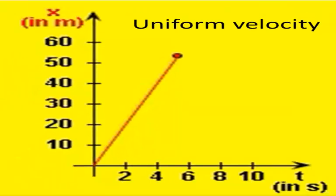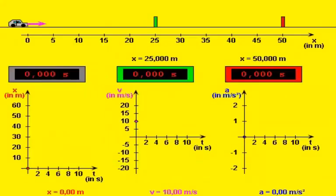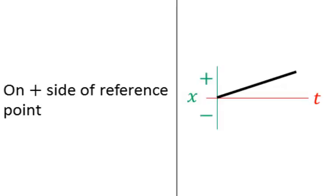We also notice that the position is always positive. We don't make this graph go beneath the zero line at all, and that's because this car moves from the reference point to the right, so it's always on the right-hand side, on the positive position of the reference.